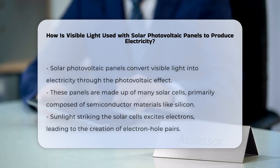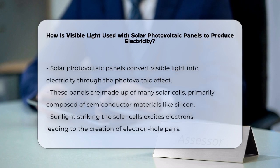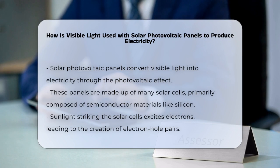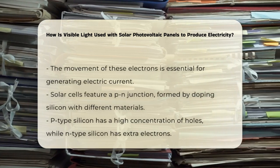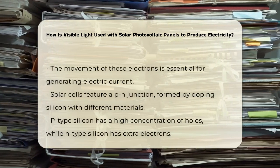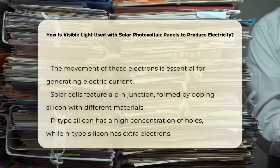Solar photovoltaic panels convert visible light into electricity through a process known as the photovoltaic effect. These panels consist of many solar cells made from semiconductor materials, commonly silicon. When sunlight strikes these solar cells, it excites electrons, creating electron-hole pairs. This movement of electrons is crucial for generating electric current.